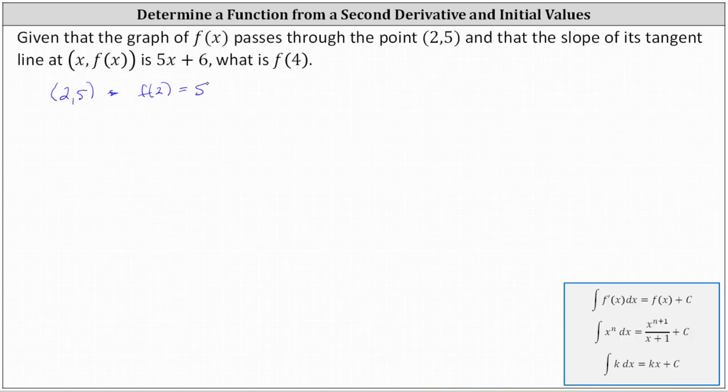Next, if the slope of the tangent line at the point (x, f(x)) equals 5x plus 6, this indicates that f'(x), the first derivative of f(x), equals 5x plus 6. Recall the function values of f'(x) are equal to slopes of tangent lines.